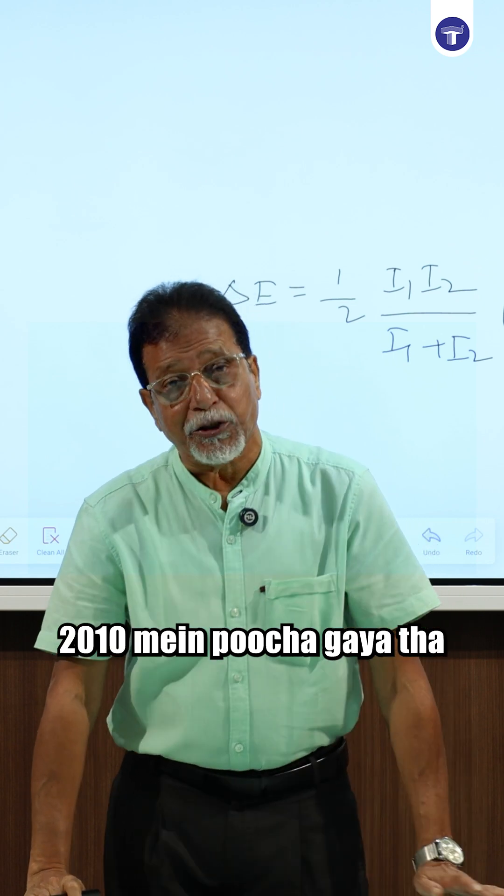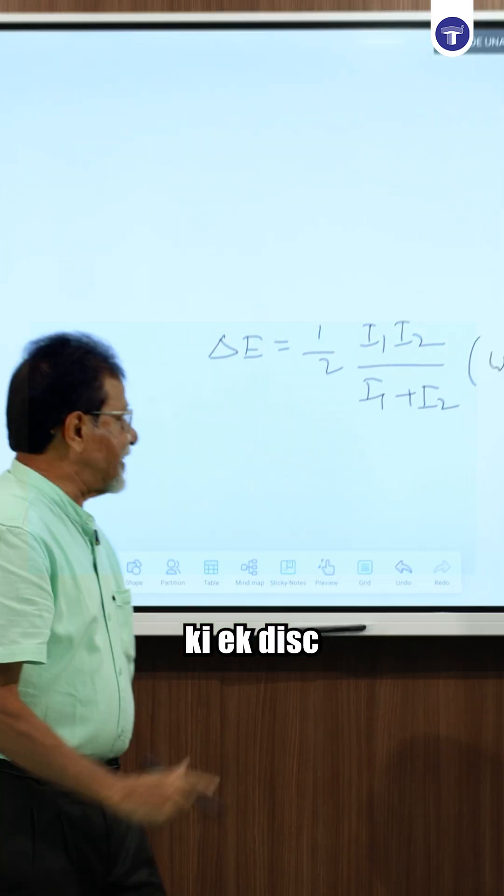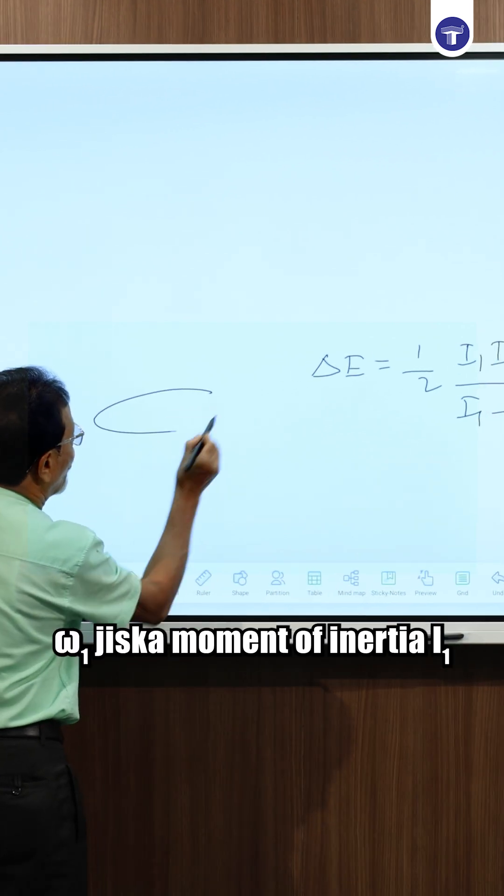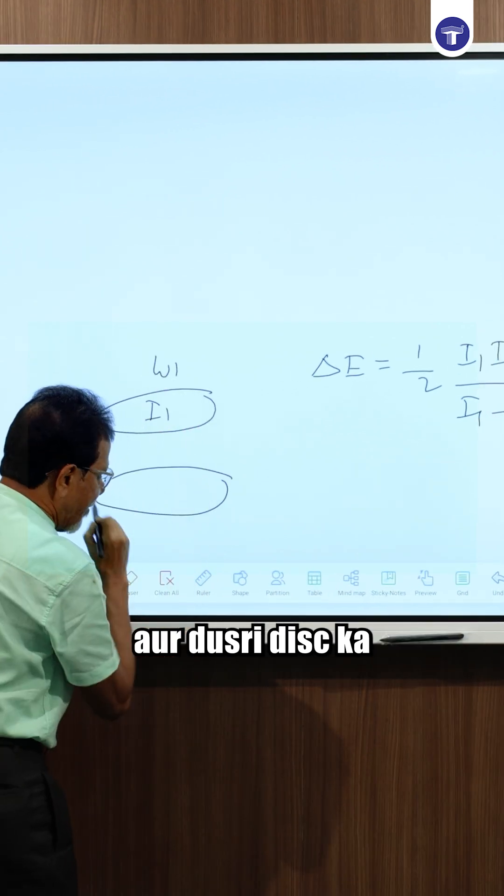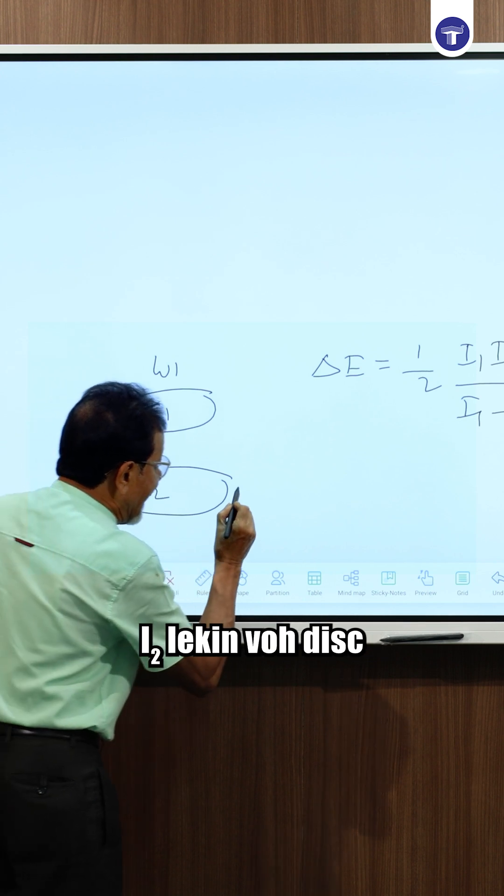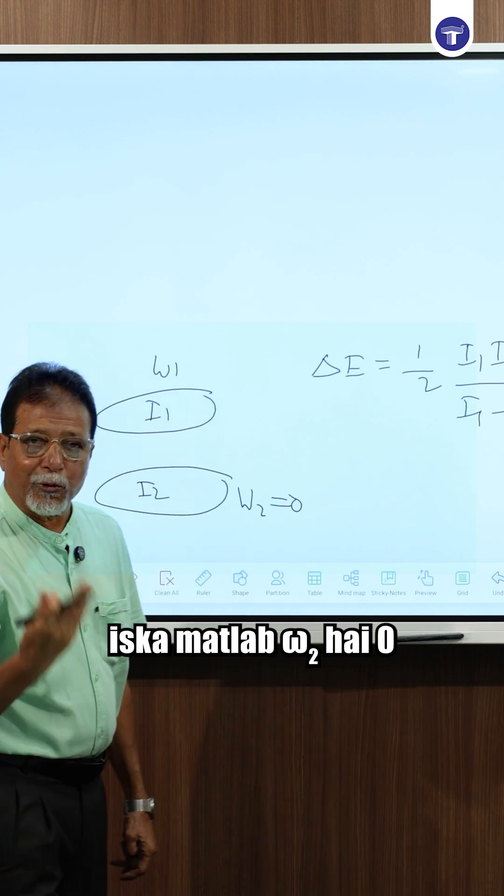Now this question in 2010 was asked. In 2010, one disc's angular velocity is Omega 1 with moment of inertia I₁, and the other disc has moment of inertia I₂. This means that Omega 2 is zero.